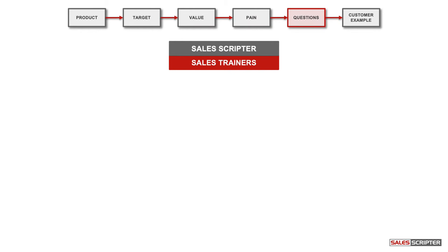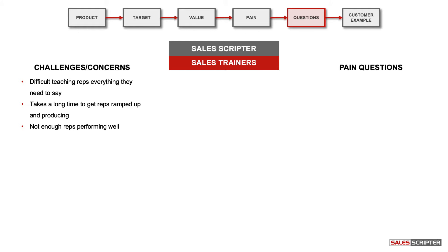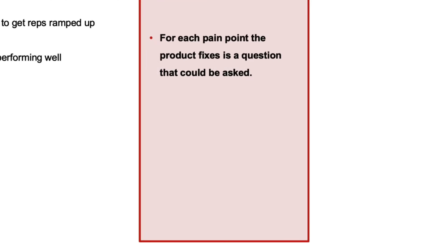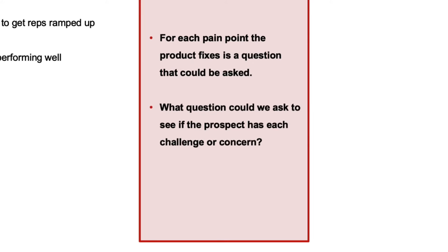The next step is to create an optimum set of questions to ask for the product or service that you sell. I personally believe the best salesperson is the one that asks the best questions — but you could agree with that 100% and still not know what questions to ask. This process will help you create an optimum set of questions that can transform all of your interactions, calls, and meetings with prospects. The first category is what I refer to as pain questions — questions that probe to see if the prospect has the pain points your product can help make go away. For each pain point, there is a question we can ask to see if that is something the prospect is concerned about.